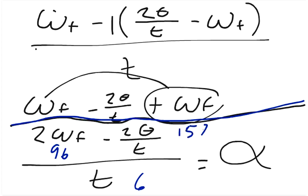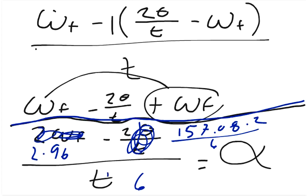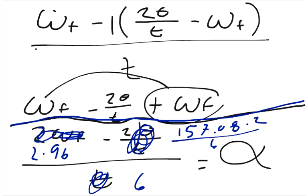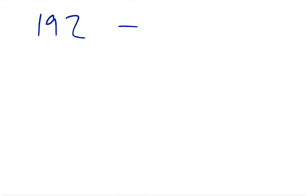So 157.08 times 2 over 6. So we basically have done away with that, and we can put 2 times there, and we can just work out our answer. So 2 times 96 is 192, and we subtract that from 157.08 times 2 over 6. That is 52.36.